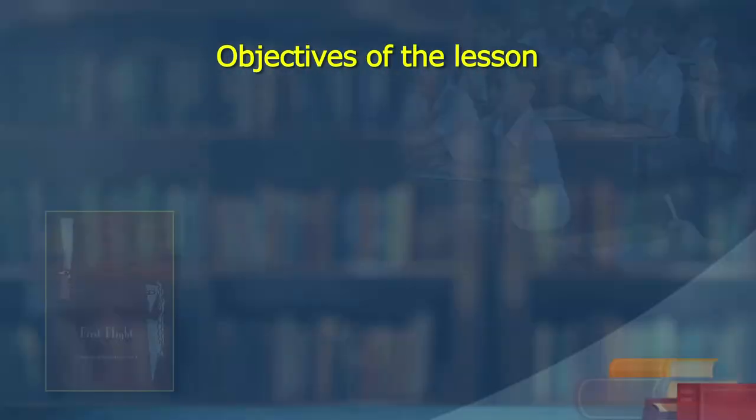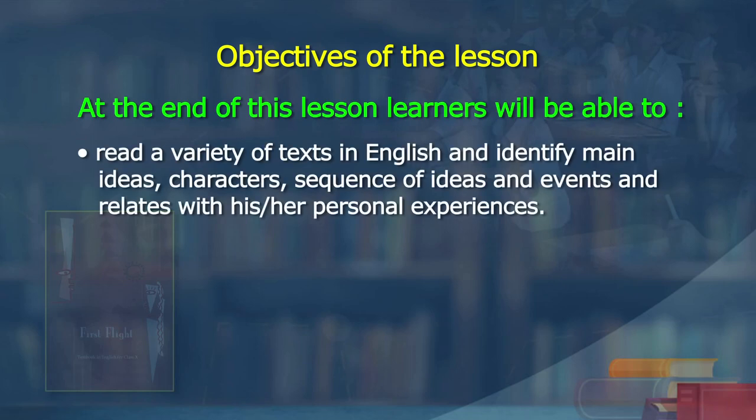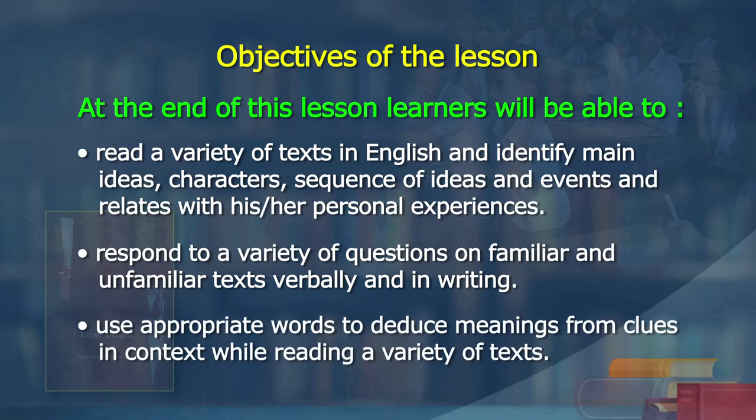The objectives of the lesson: at the end of this lesson, the learner will be able to read a variety of texts in English and identify main ideas, characters, sequence of ideas and events, and relate with personal experiences. Respond to a variety of questions on familiar and unfamiliar texts, verbally and in writing. Use appropriate words to deduce meanings from clues in context while reading a variety of texts. Learners, three objectives: understand the story's ideas and characters, respond to questions, and learn vocabulary including negative emphasis.